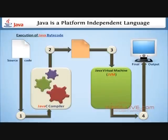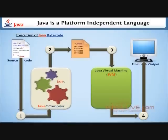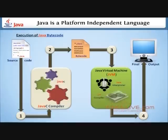We are looking at a figure that explains the execution flow of a Java program. First, write your source code in a plain text file and save it with the .java extension. Using the javac compiler, the source code is compiled into .class files. A .class file contains source code in the form of bytecode. Bytecode is the machine language of the Java Virtual Machine, or JVM. Java interpreter and JIT compiler are present inside the JVM. The JVM converts the bytecode .class into executable code .obj with the help of the interpreter or JIT compiler as needed. This .obj file is used to generate the output.